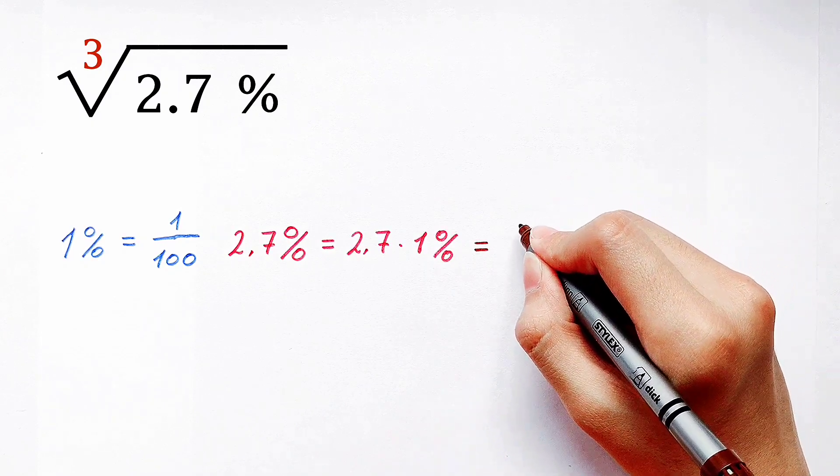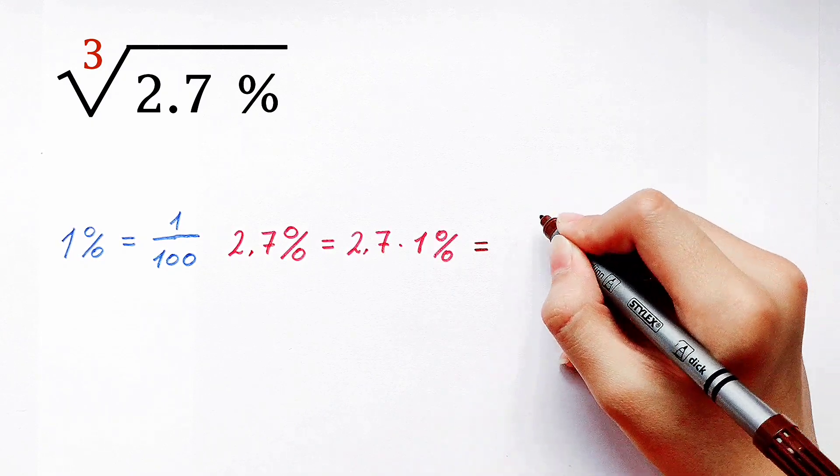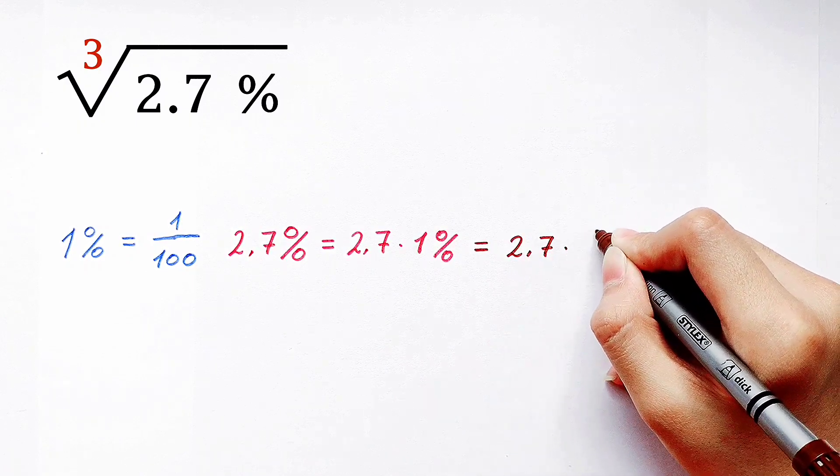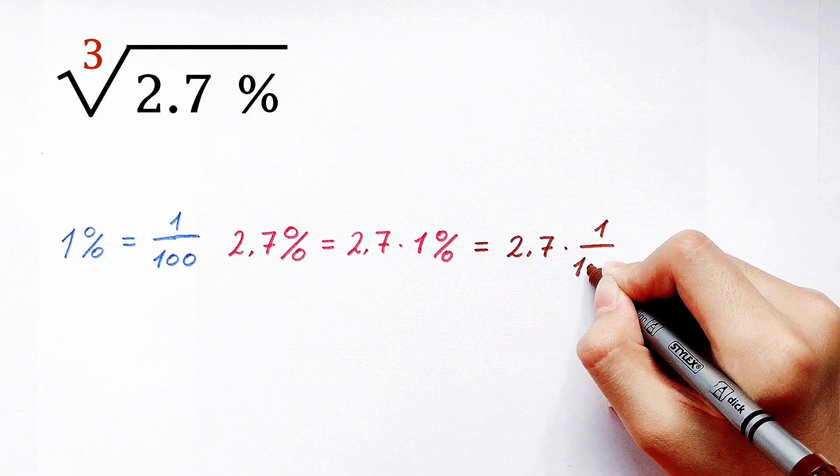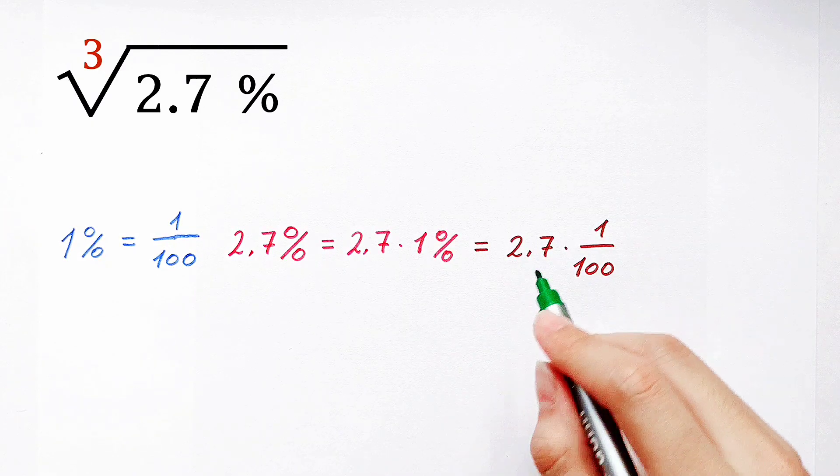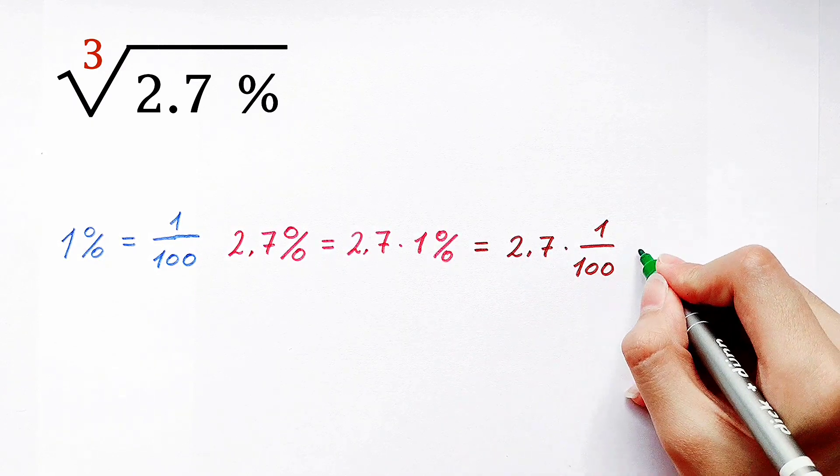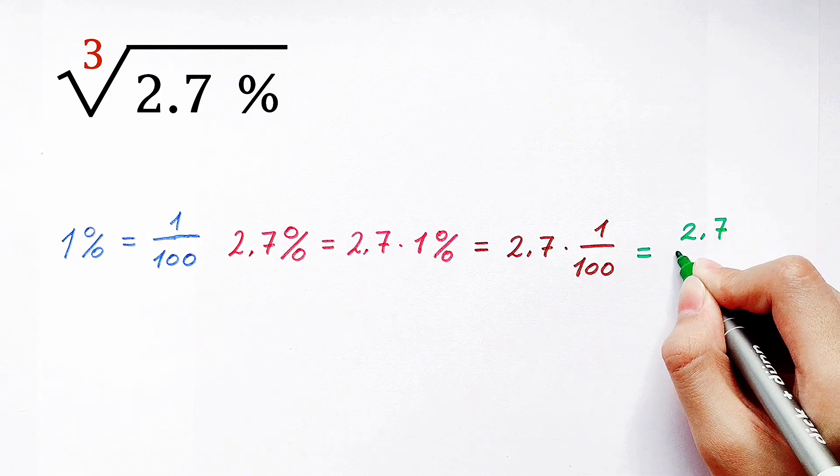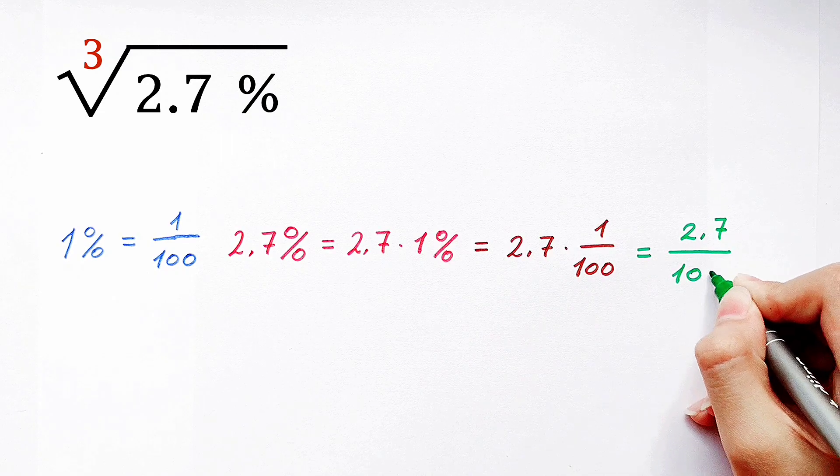1 percent is 1 over 100. So 2.7 times 1 percent is 2.7 times 1 over 100, which is 2.7 over 100.